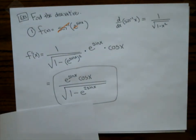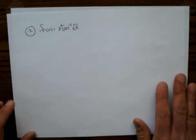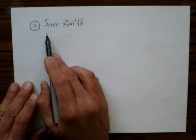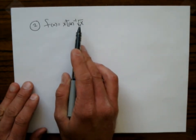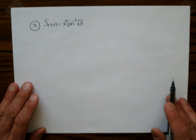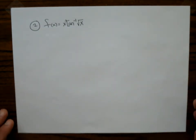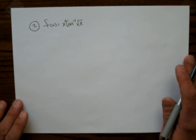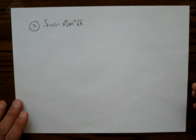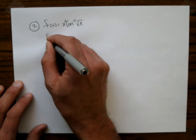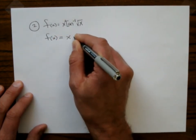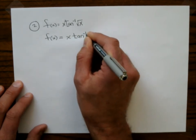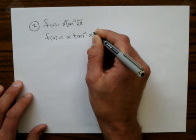We're going to do problem number 2: find the derivative of x times tangent inverse of the square root of x. If you want to try, pause the video and see what you can get. The first thing I'm going to do is rewrite the square root of x as x to the 1 half: tangent inverse of x to the 1 half.